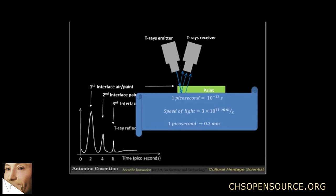Then, in one picosecond, light and therefore T-Ray travels 0.3 millimeters.